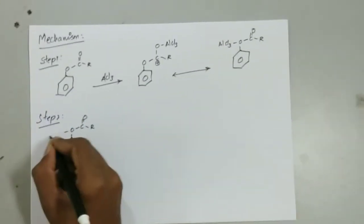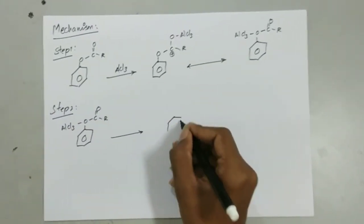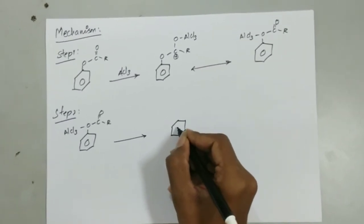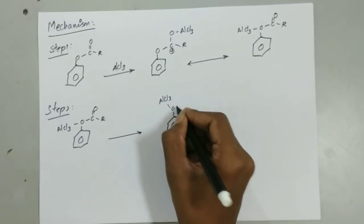Step 2. The compound formed thus is not stable, and the oxygen attracts the lone pair of electrons, which results in the removal of the acyl group from the phenolic group.